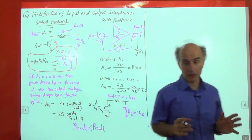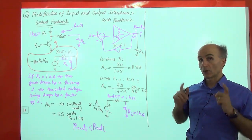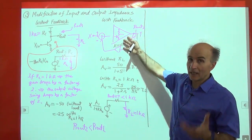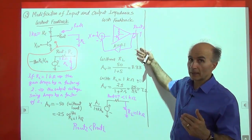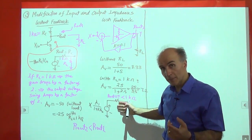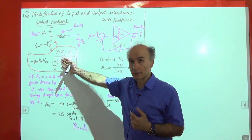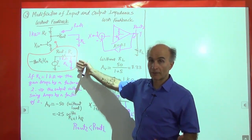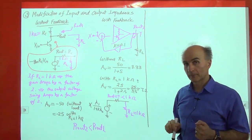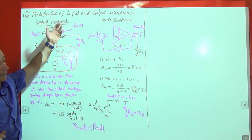We will quantify this more carefully later, but this gives us the fundamental intuitive understanding: as a result of negative feedback, the circuit's gain is less sensitive to load. The gain went from 8.33 to 7.2, and looking at the Thevenin equivalent, the output resistance of the closed-loop circuit Rout2 is less than the output resistance of the open-loop circuit Rout1.